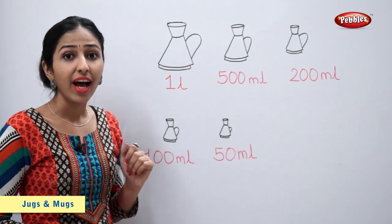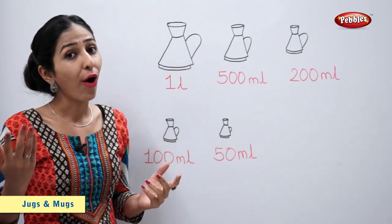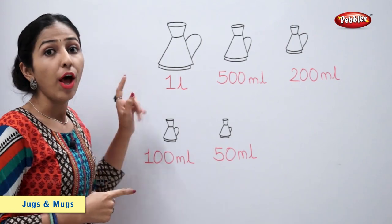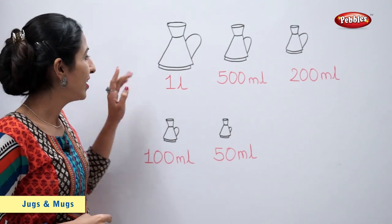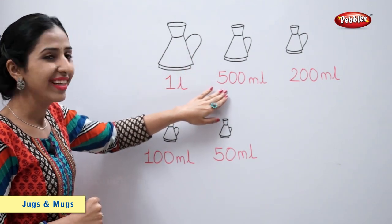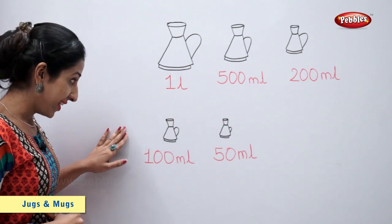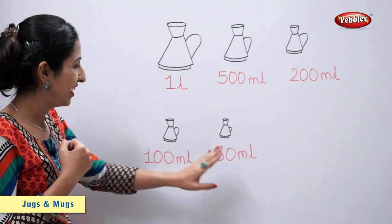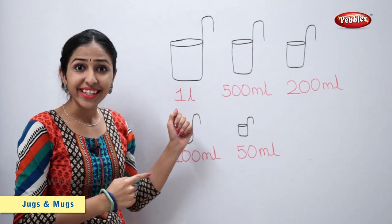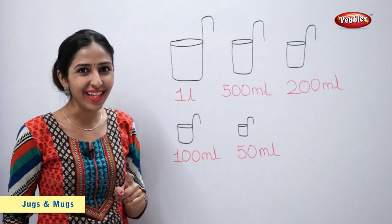These type of vessels are generally used to measure liquids like petrol, oil, kerosene etc. This vessel when completely filled holds one litre liquid. This 500 ml. This 200 ml. This 100 ml. This 50 ml. These type of vessels are generally used to measure liquids like milk and oil.